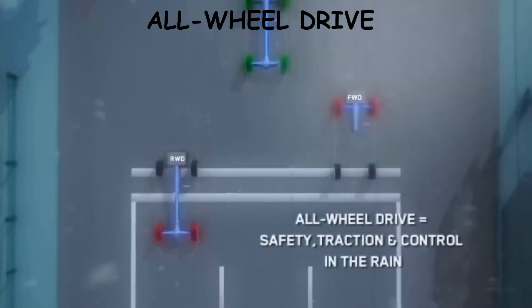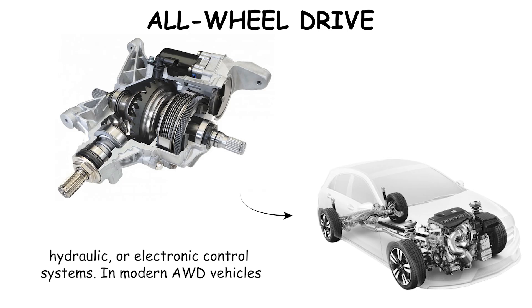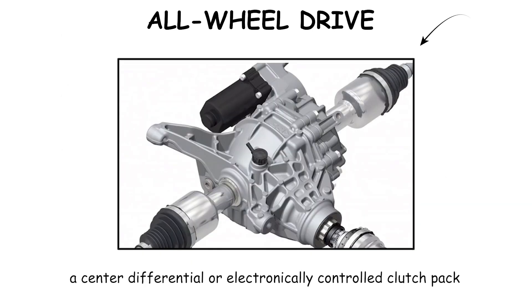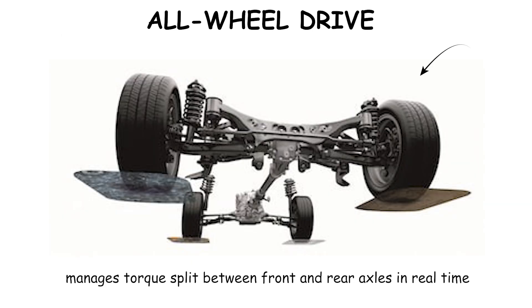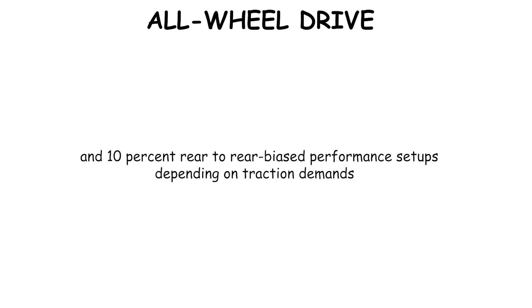All Wheel Drive (AWD) is a drivetrain system designed to automatically deliver engine torque to all four wheels using mechanical, hydraulic, or electronic control systems. In modern all-wheel drive vehicles, a center differential or electronically controlled clutch pack manages torque split between front and rear axles in real time. Typical torque distributions range from front-biased 90% front and 10% rear to rear-biased performance setups depending on traction demands.